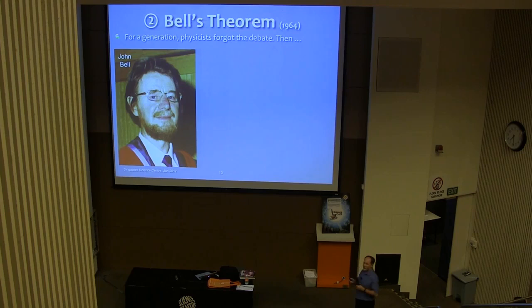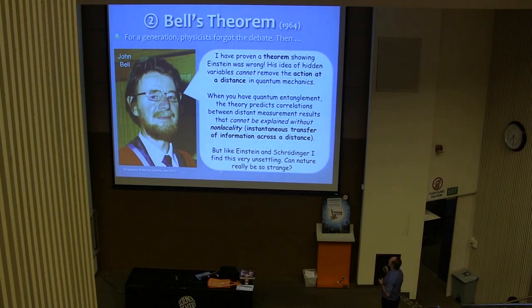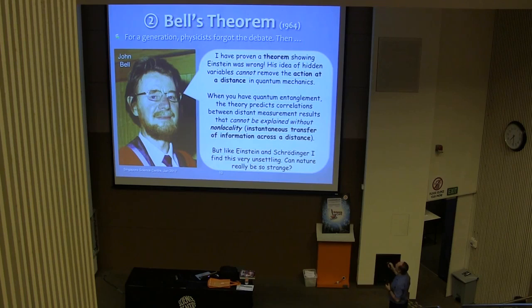But there were a few physicists who weren't like that. A few of them kept worrying about this, and in particular one who did some of the absolutely crucial work in this and should be much better known but isn't is John Bell. So he was a physicist from Belfast in Ireland, and in 1964 he published a crucial paper. So he's saying, I've proven a theorem showing that Einstein was wrong, not many people have done that. Proving that his idea that hidden variables can remove the action of the distance in quantum mechanics, in the Copenhagen interpretation, cannot work. That you could add hidden variables, but they will not remove the action of the distance in the Copenhagen interpretation.